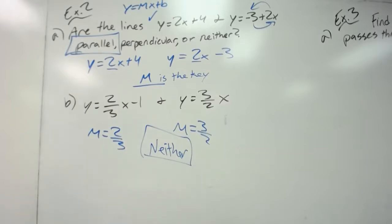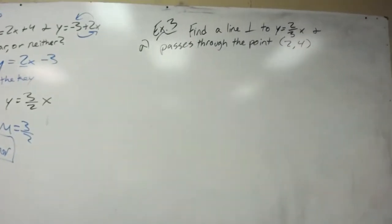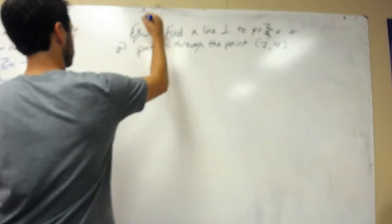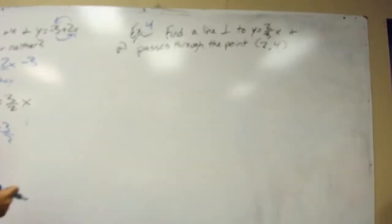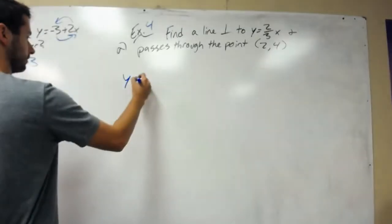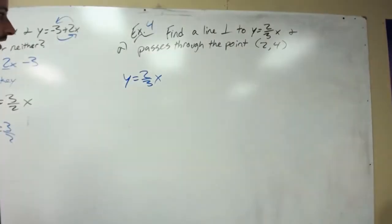One more example. This is actually example 4, I wrote example 3. It wants us to find a line perpendicular to 2 thirds x and passes through the point (2, 4). We're going to take y equals 2 thirds x and find a line perpendicular.